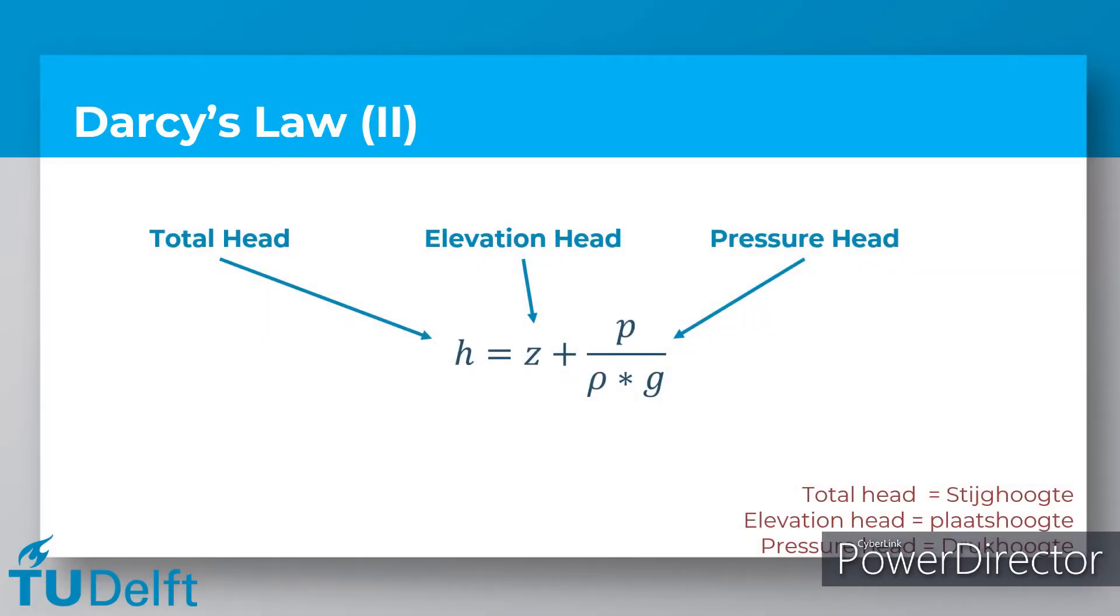The total head can be related to the elevation head and pressure head using the following equation. The total head, denoted by h, can be measured from the riser tubes. The total head is the sum of the elevation head and pressure head. The elevation head, denoted by z, is measured at a connection point between the riser tubes and the soil sample. If the elevation head and the total head are known, the pressure head and the corresponding water pressure can be calculated using the following equation.